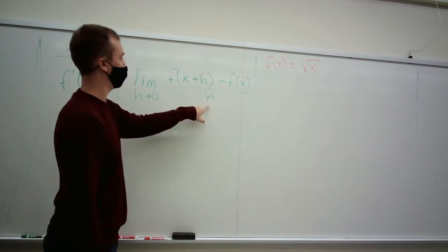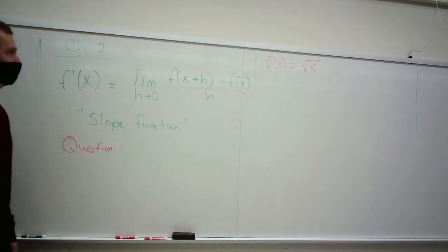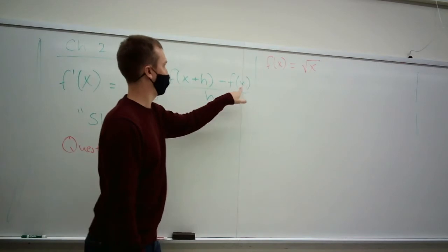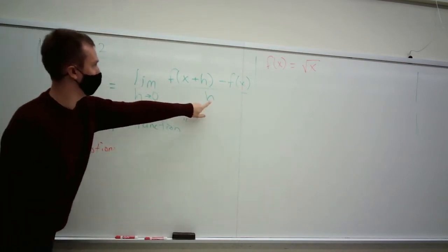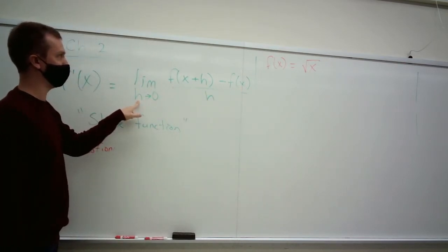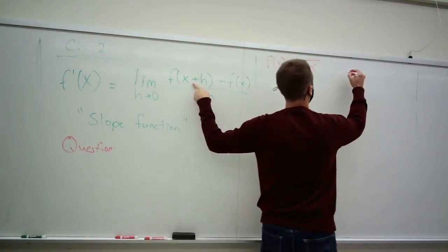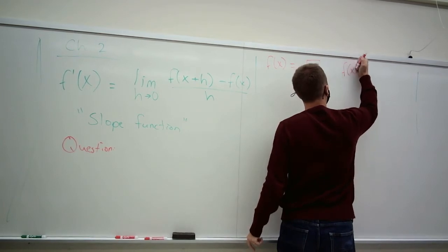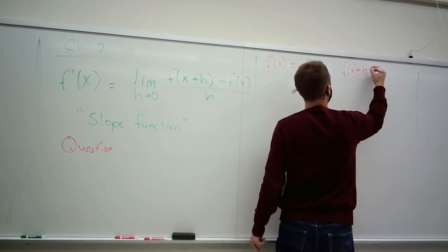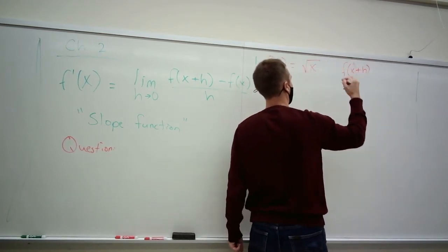We need to find everything that is in this quotient, this difference quotient. We have the original function, so that's that. That's great. We have h, essentially, because it's just some number that's going to become nothing. We don't have this. This is the very first thing you should do when finding any limit, is write down the composition of function with x plus h.